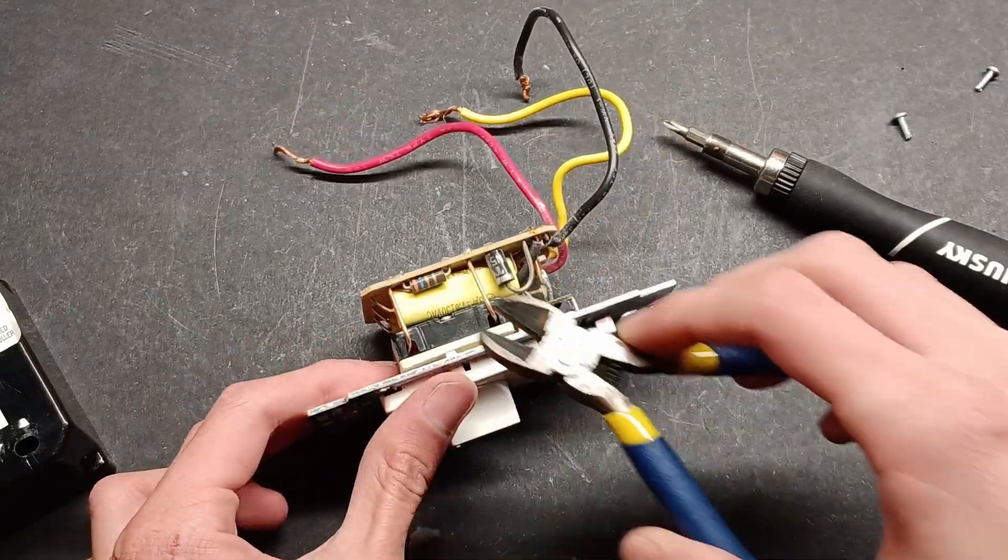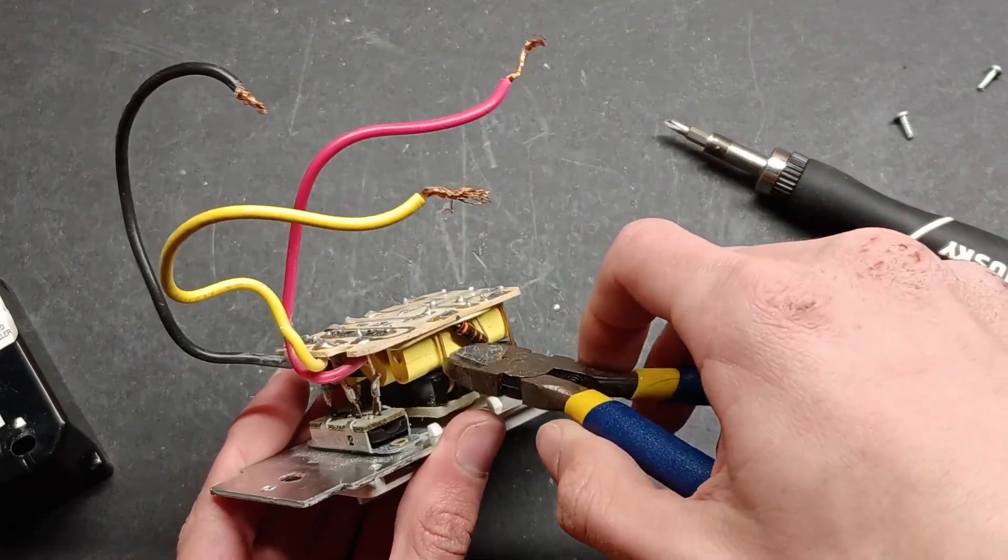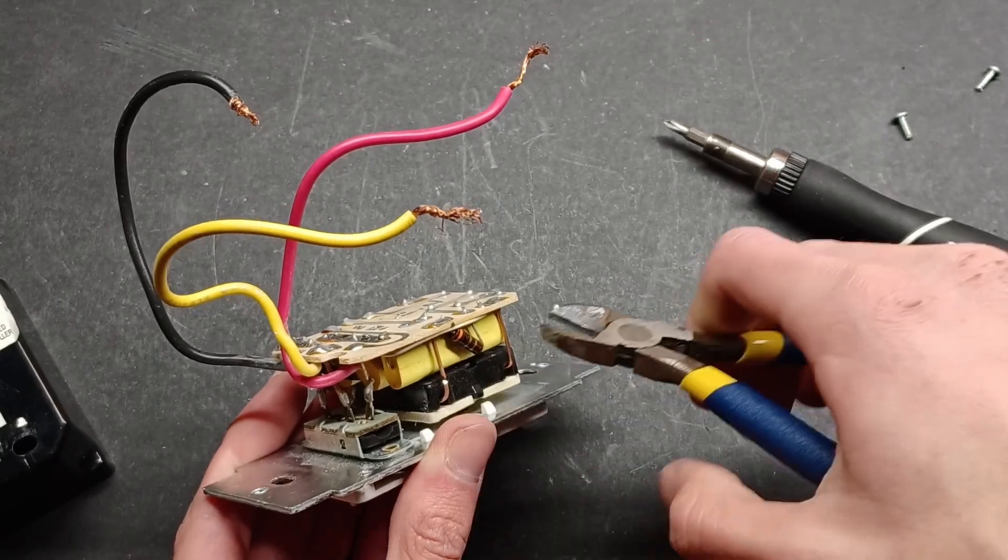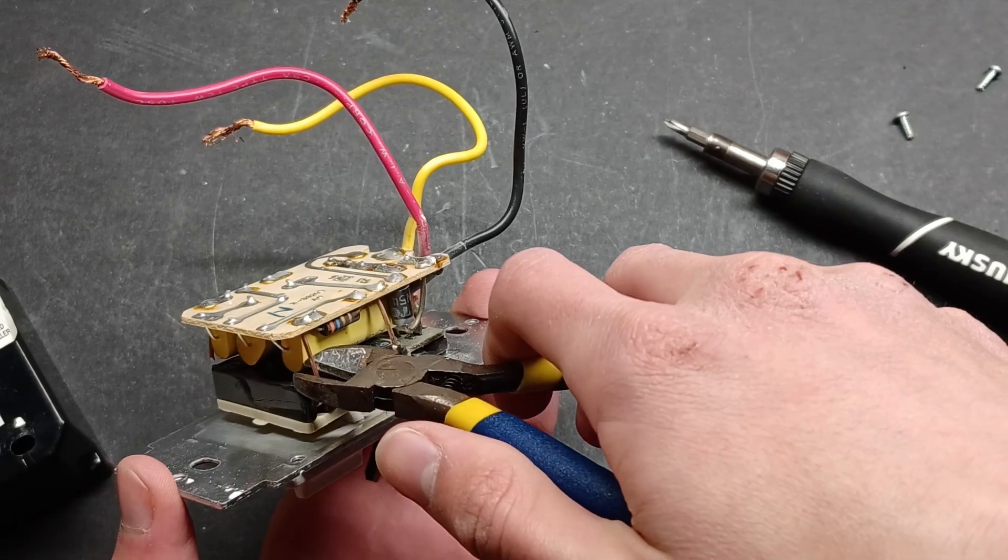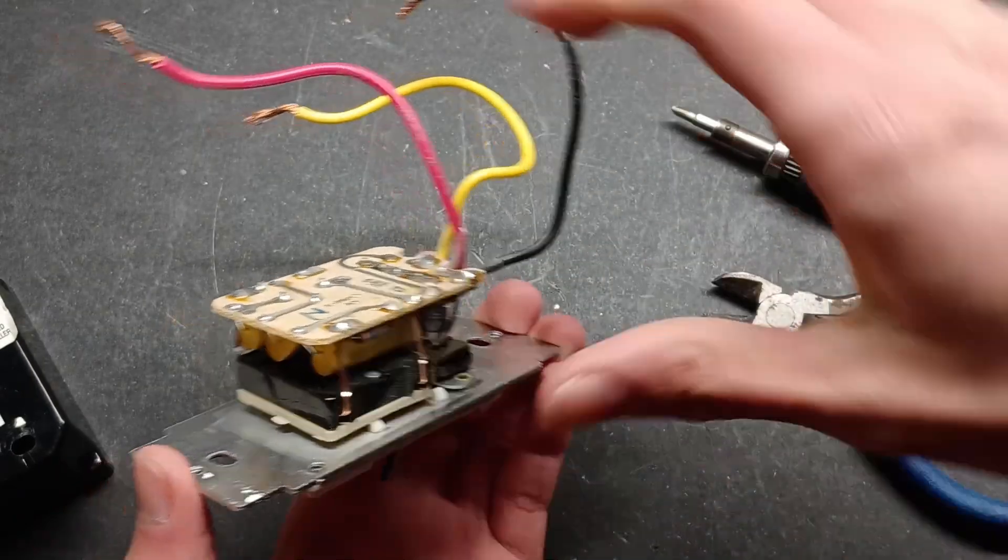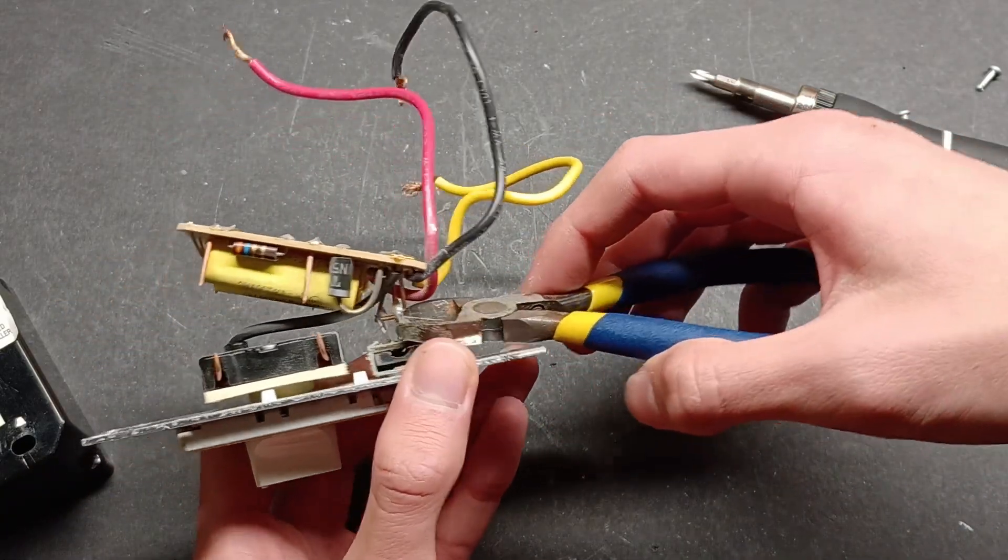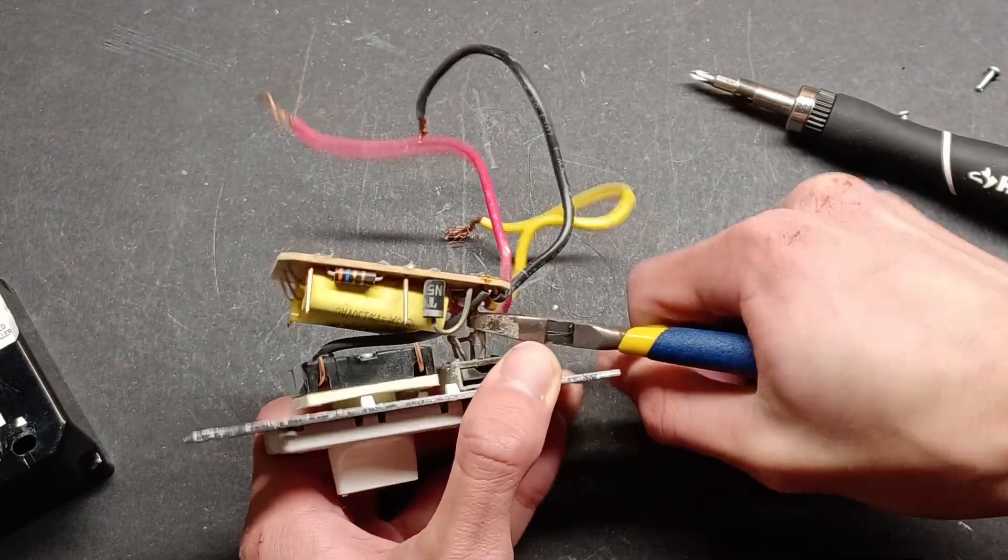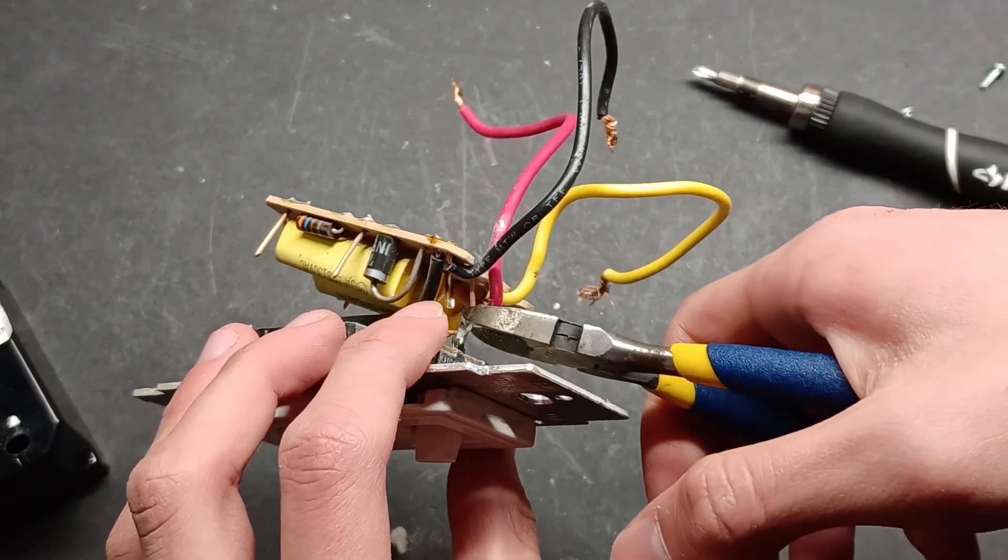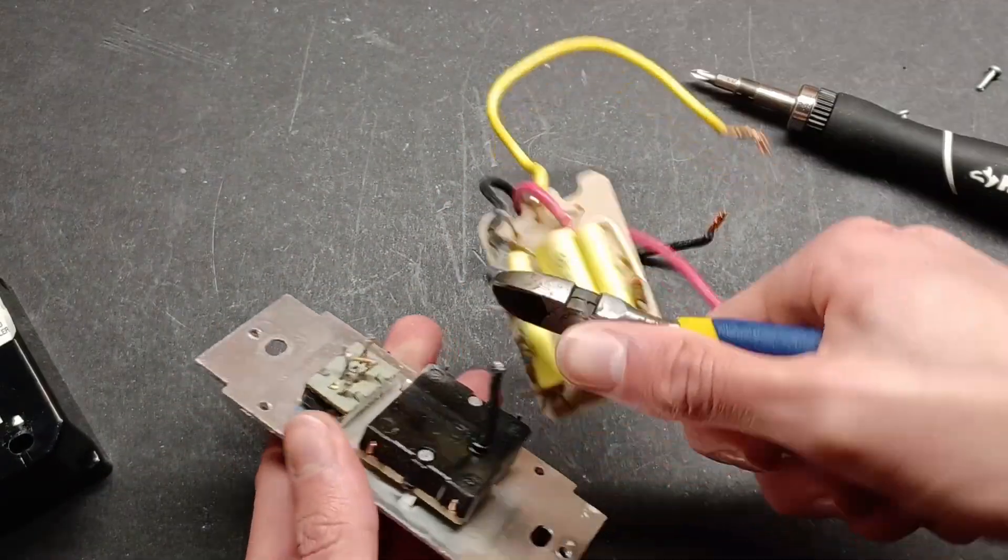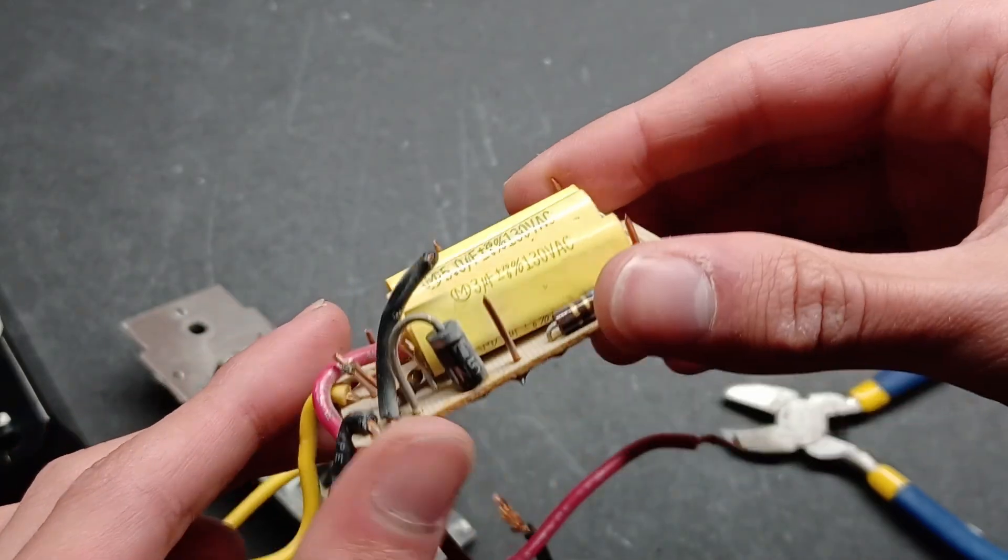Now I am going to remove this switch that selects the fan speed by cutting its wires. I will also cut the wires for the light switch. Now that the speed selector switch is removed,